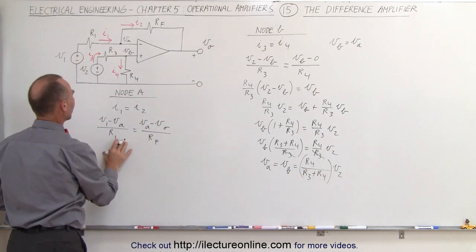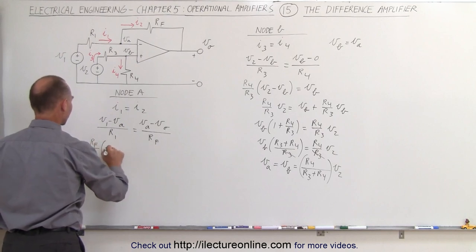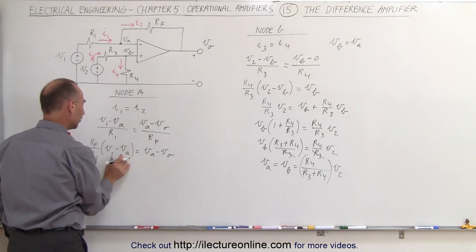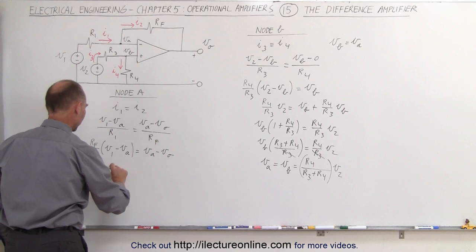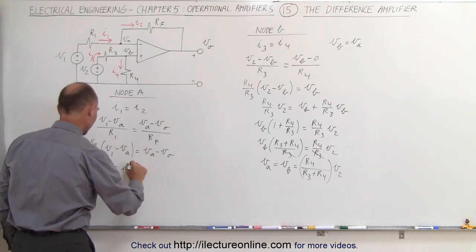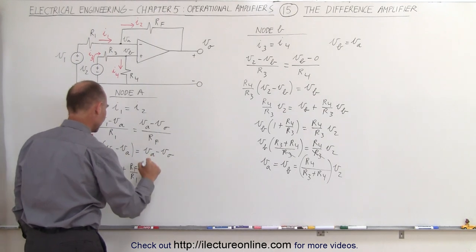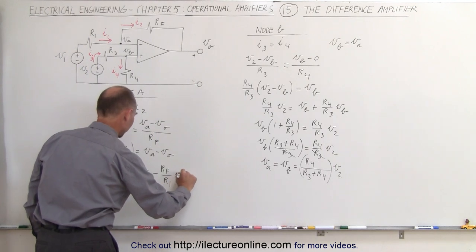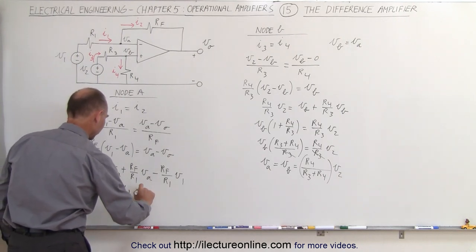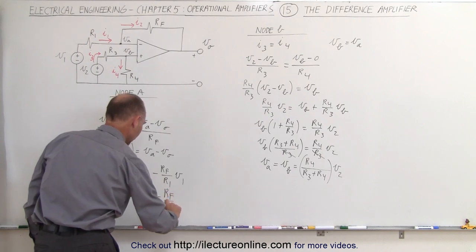Now that we have an equation for VA in terms of V2, we can continue to develop the node A equation. Multiplying through, we get RF divided by R1 times (V1 minus VA) equals VA minus VO. Rearranging, VO equals VA times (1 plus RF over R1) minus RF over R1 times V1.